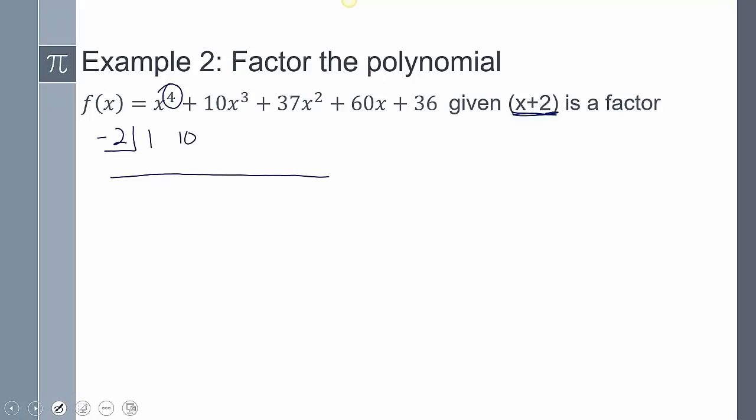1, 10, 37, 60, and 36. I'll write out the coefficients, add straight down, multiply, add straight down, multiply, add straight down, multiply. And so that's going to give me negative 42, add straight down, and multiply. And so I get that. So that's where my remainder, my remainder is 0. Yay! It's a good thing. That means it factored, right?